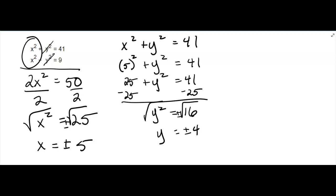What that means is when I put in a 5, I can have it match with 4, or if I put in 5, I can have it match with negative 4. Now you have to do the whole thing if you put in negative 5.